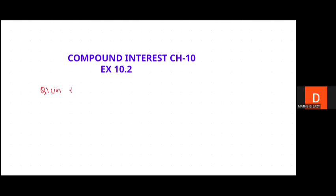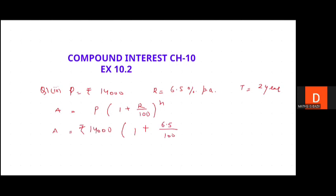The given values for the third part is: principal is given as rupees 14,000, rate of interest is given as 6.5 percent per annum, and time is given as 2 years. What we have to find out is the amount. The formula is: A = P(1 + r/100)^n. We have to put all the given values.